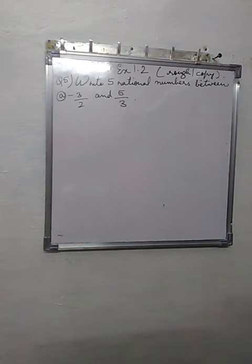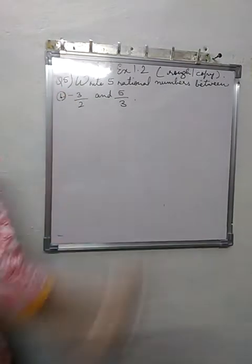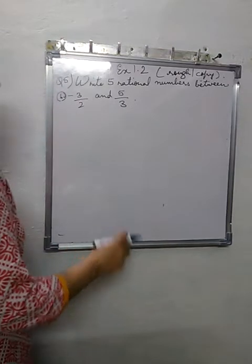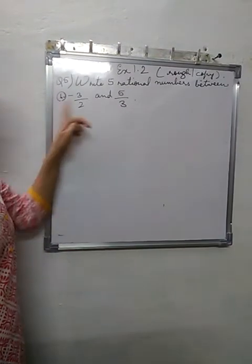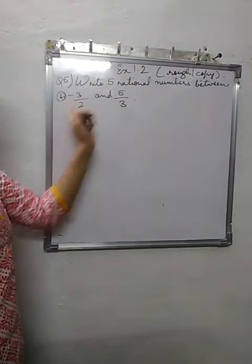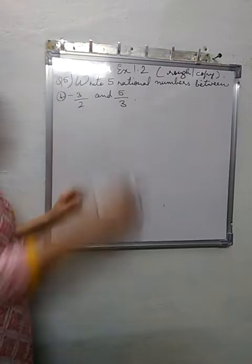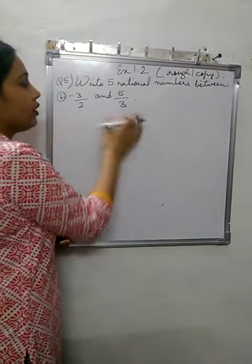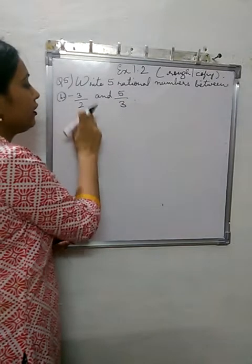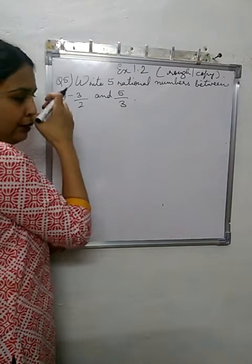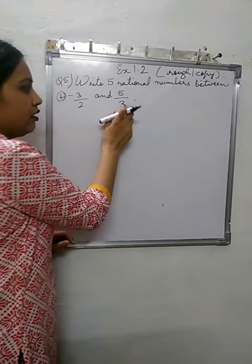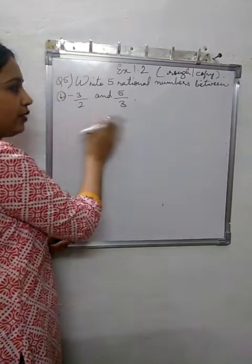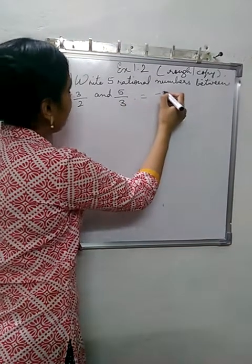Here, going ahead with the B part. Write 5 rational numbers between minus 3 by 2 and 5 by 3. Again, first we make the denominator same. Now, if we interchange and multiply, you can see 2 and 3 nothing is common. So if you multiply 3 here and 2 here, you will get 2 times 3 is 6, 3 times 2 is 6, which will make your denominators same.